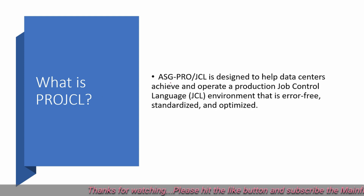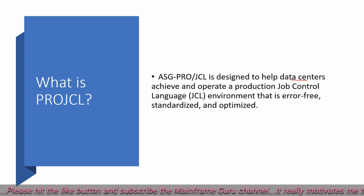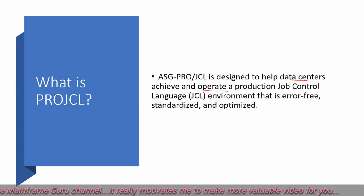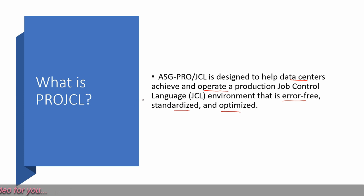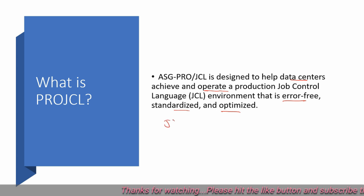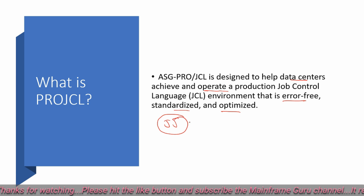What is PROJCL? PROJCL is designed to help data centers achieve and operate a production JCL environment that is error-free, standardized, and optimized. PROJCL tells you if there is any error in your JCL — similar to the JJ command to check syntax errors. It also tells you whether a dataset exists in a job as input or output.